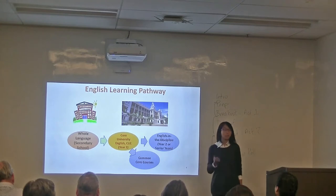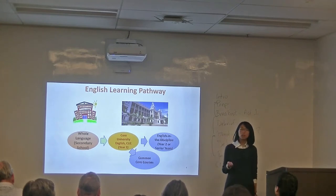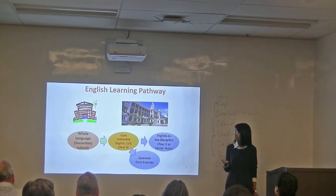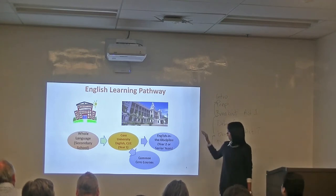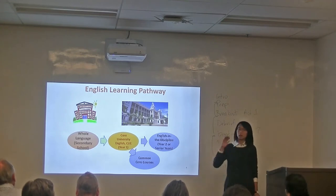Topics students engage with critically in CUE cover the four areas of the Common Core courses: scientific and technological literacy, humanities, global issues, and China, culture, state and society. Research done by our centre found that essays and reports are the most frequently assigned written tasks, while tutorial discussions are the most frequently used speaking assessments. That is why CUE focuses on reports, essays, and tutorial discussions.